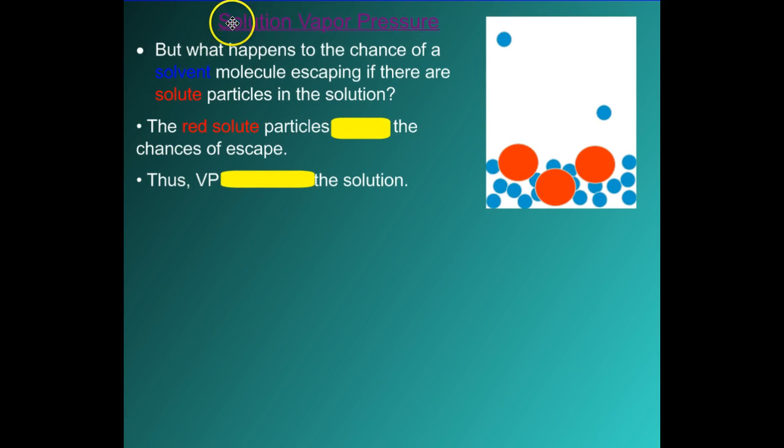Solution vapor pressure: what happens to the chance of a solvent molecule, noted here as the blue, escaping if there are solute, noted as the red particles, in the solution? The red solute particles are going to reduce the chances of their escape. Look, they are blocking some of these molecules from escaping out. Therefore the vapor pressure of the solution is going to be lower for a solution. That is a very significant point to understand here: vapor pressure is higher for a pure solvent than for a solution. Understand this.